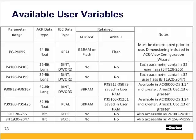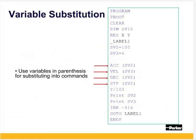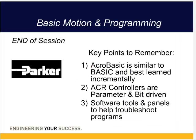This chart gives a quick reference guide for the different parameter and bit ranges available to users, the data types, and whether or not they are retained. Note that for variable substitution into other commands, use variables within parentheses. This ends the ACR basic motion and programming training.